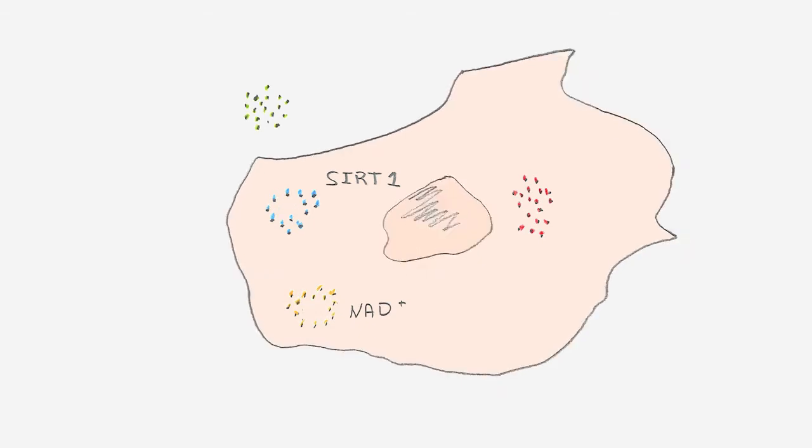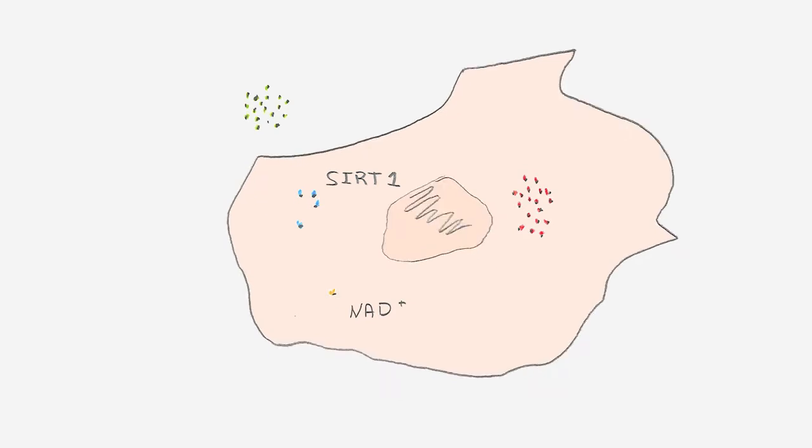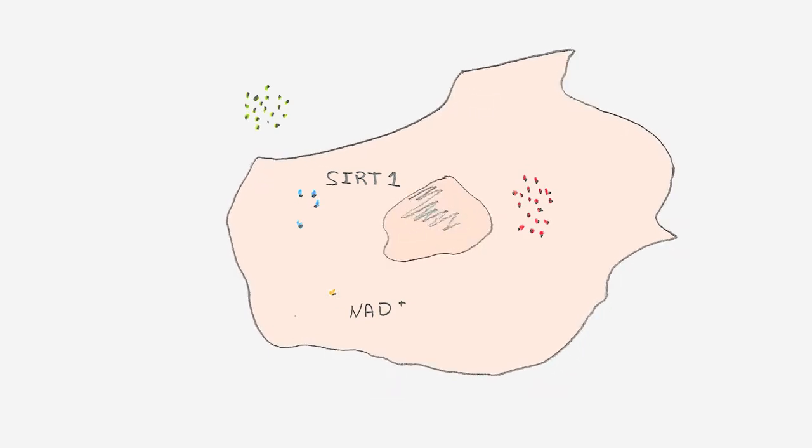But both NAD and SIRT1 decline as we age. They can no longer perform their role as the interface between the muscles and blood vessels.